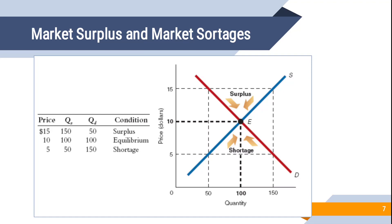We have prices 15, 10, and 5, with quantity supplied at 150 and quantity demanded at 50, 100, and 150. On the x-axis we have quantity and on the y-axis we have prices. At price 10, 100 items are available for sale and buyers want to buy 100 — so 100 is the ideal quantity and 10 is the equilibrium price.